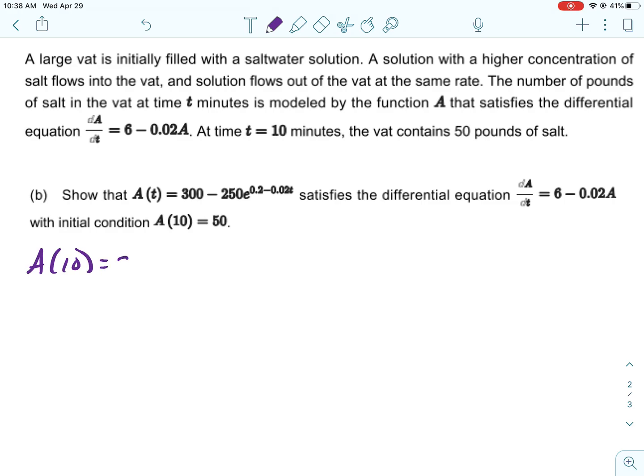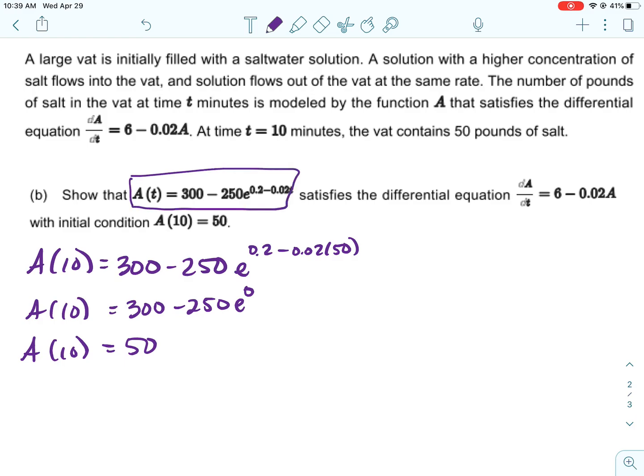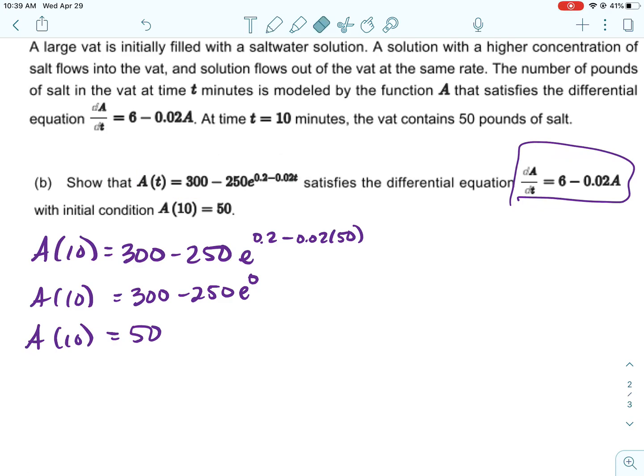Then for B, we're going to show that A of t equals all that mess satisfies the differential equation for the initial condition A of 10 equals 50. This was tough. Part of it isn't tough. Like the initial condition is not hard. You just plug it in the calculator. So we do get 50, which is what we were supposed to do. So we're good on that one.